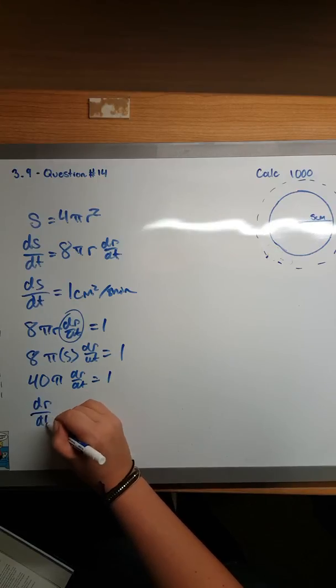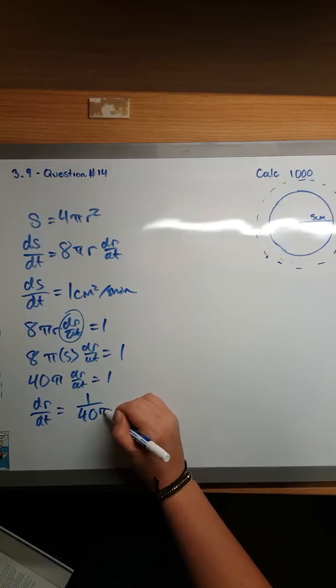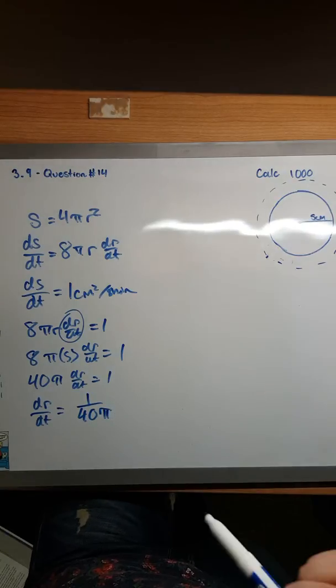Then you get 40π(dr/dt) equals 1, which means dr/dt equals 1 over 40π, and that is the rate of change for the radius.